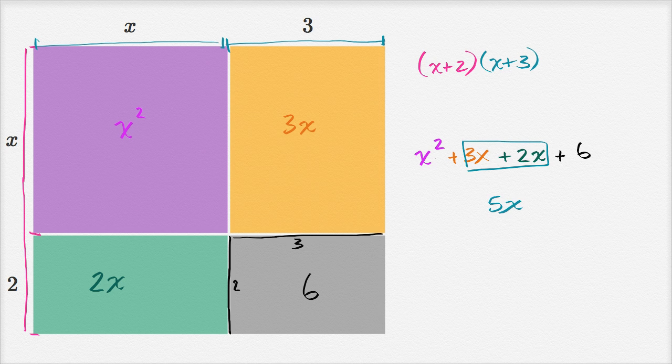So this entire thing simplifies to x squared, plus five x, plus six. So this and this are two ways of expressing the area. So they're going to be equal. And that makes sense, because if you multiplied out these binomials and simplified, you would get this trinomial.